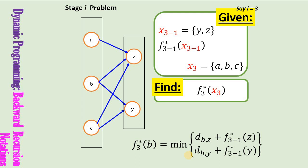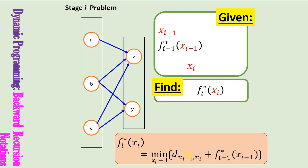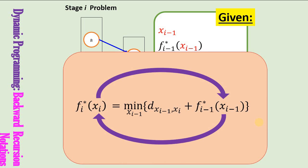These notations can be generalized: the stage i problem in backward recursion is described as — given xi and x(i−1), and the information of f(i−1) star, find fi star. The relation between fi star and f(i−1) star forms the recursive relation in the backward recursion method.